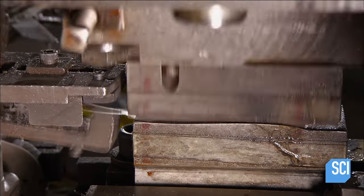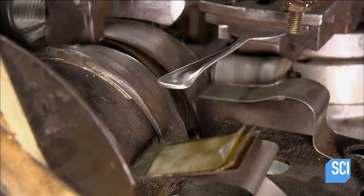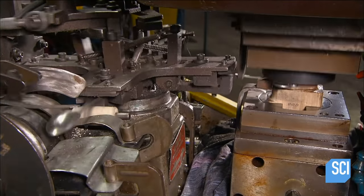Next, a machine called a coining press punches a pattern into the handle, then forms the bowl to its rounded shape.